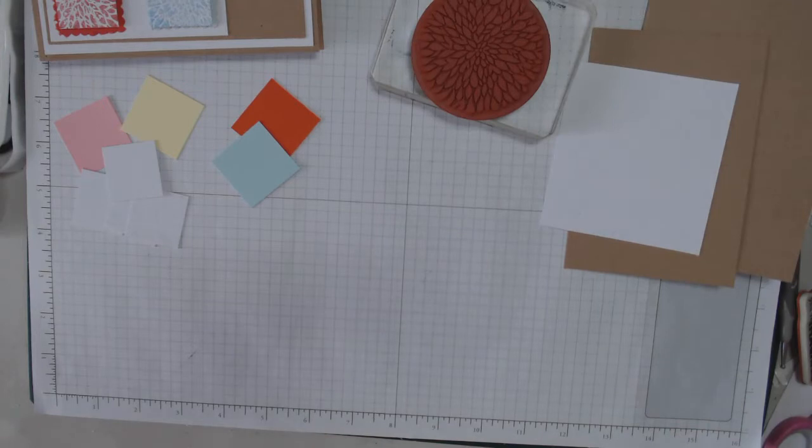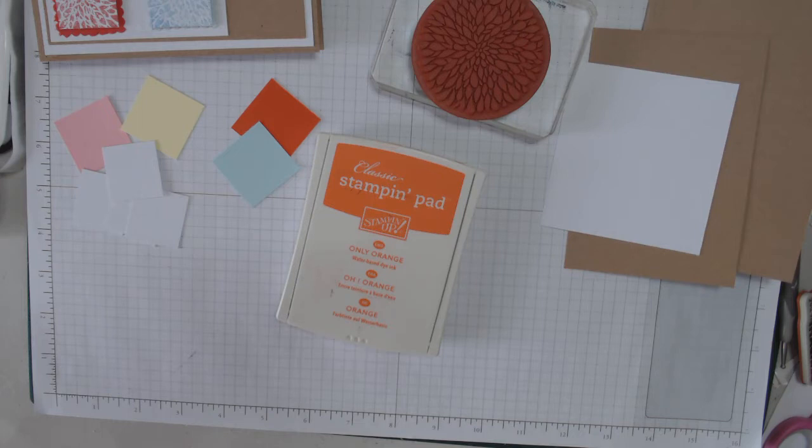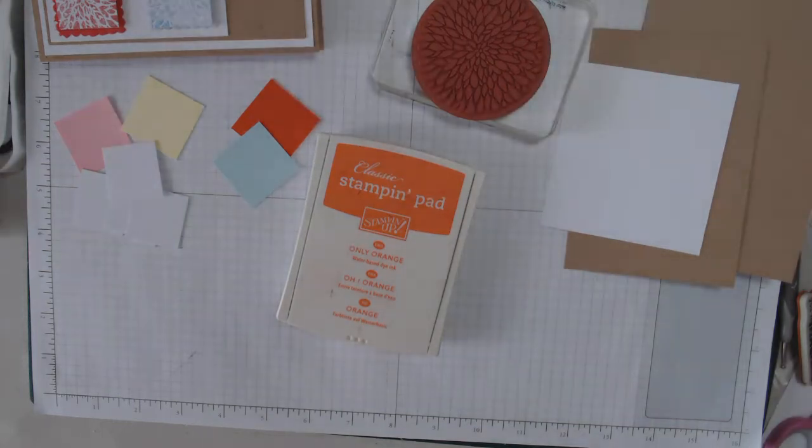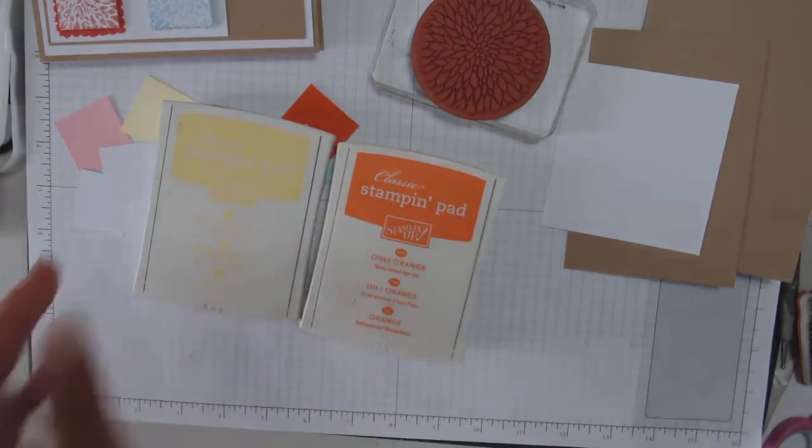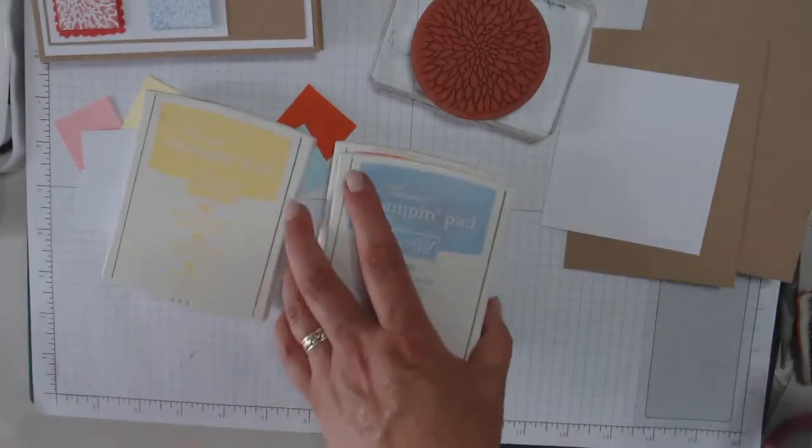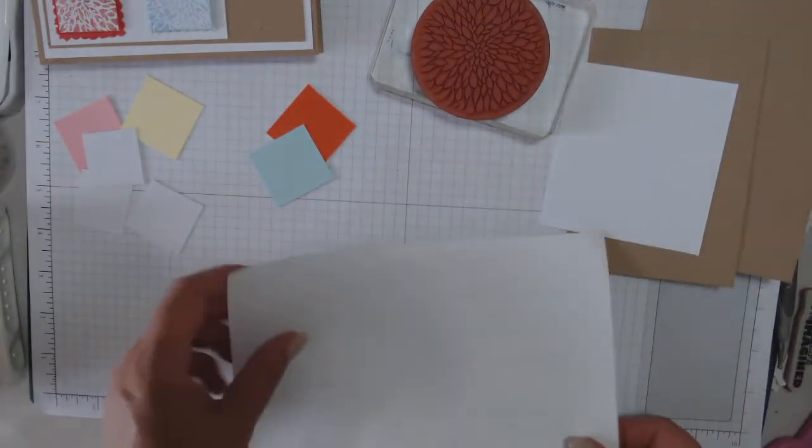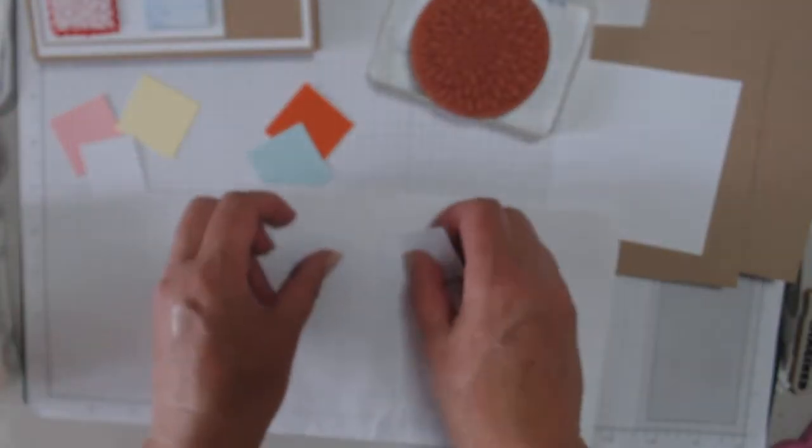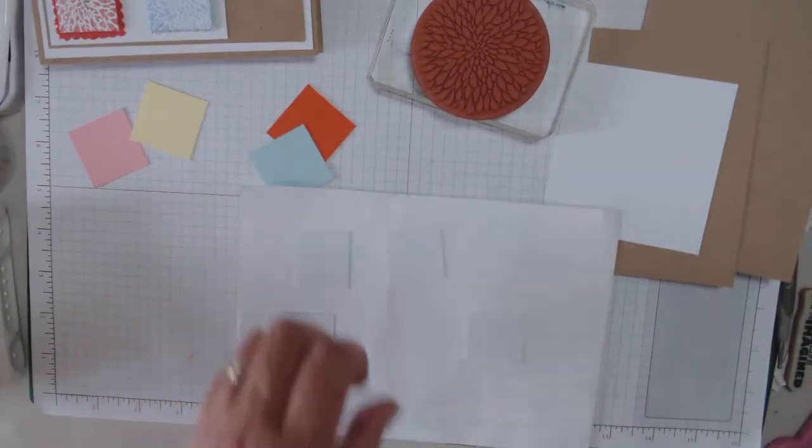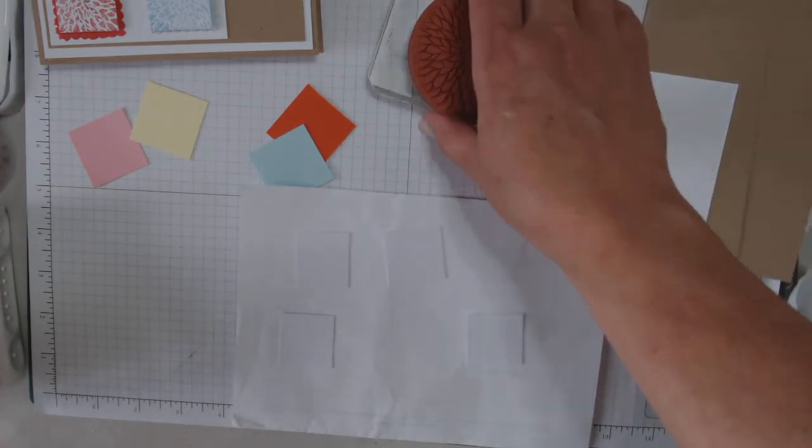Right, the colours you will need, just a minute because I didn't get them out. Only orange, and Bella Banana, Bashful Blossom, Real Red. Okay, get some scrap cardstock.